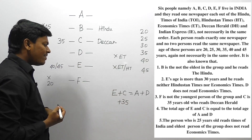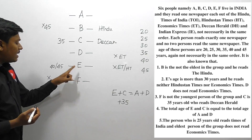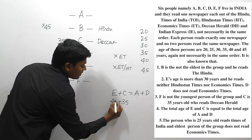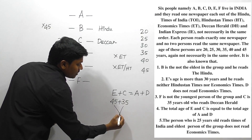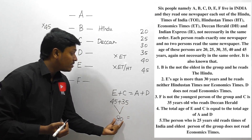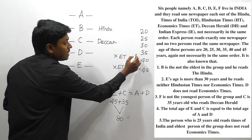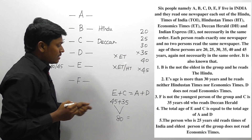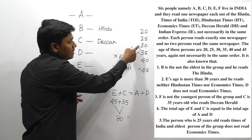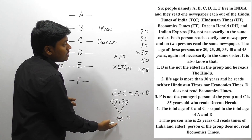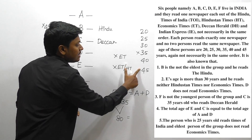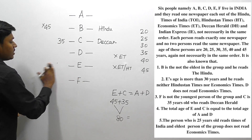E's age is either 40 or 45. Let's assume E's age is 45. Then the total age of E and C would be 45 + 35 = 80. We need A + D = 80. We've eliminated 45 and 35 already. With the remaining numbers, 40 + 30 = 70 (not 80), and 40 + 20 = 60 (not 80). So E's age cannot be 45.